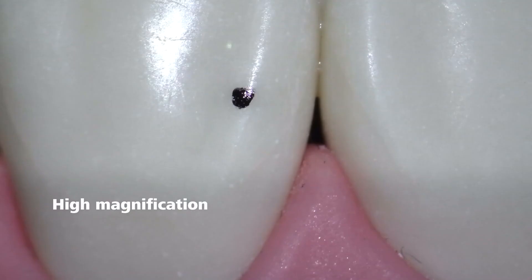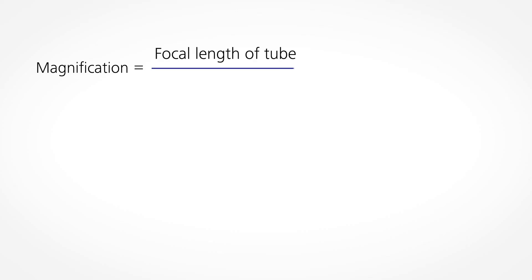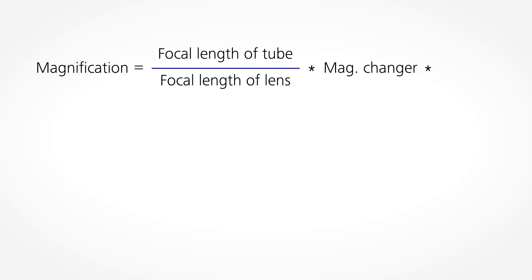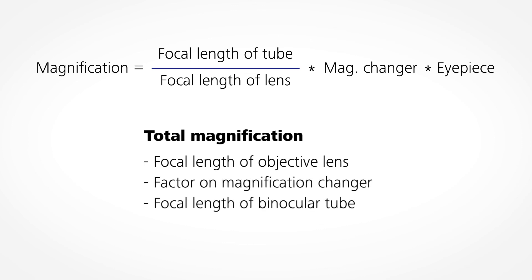High magnification of approximately 16 to 29 times enlargement is used for viewing fine details and carrying out precise treatments. The total magnification of a dental microscope is calculated with a formula and depends on various factors: the focal length of the objective lens, the factor on the magnification changer, the focal length of the binocular tube, and the magnification factor of the eyepieces.